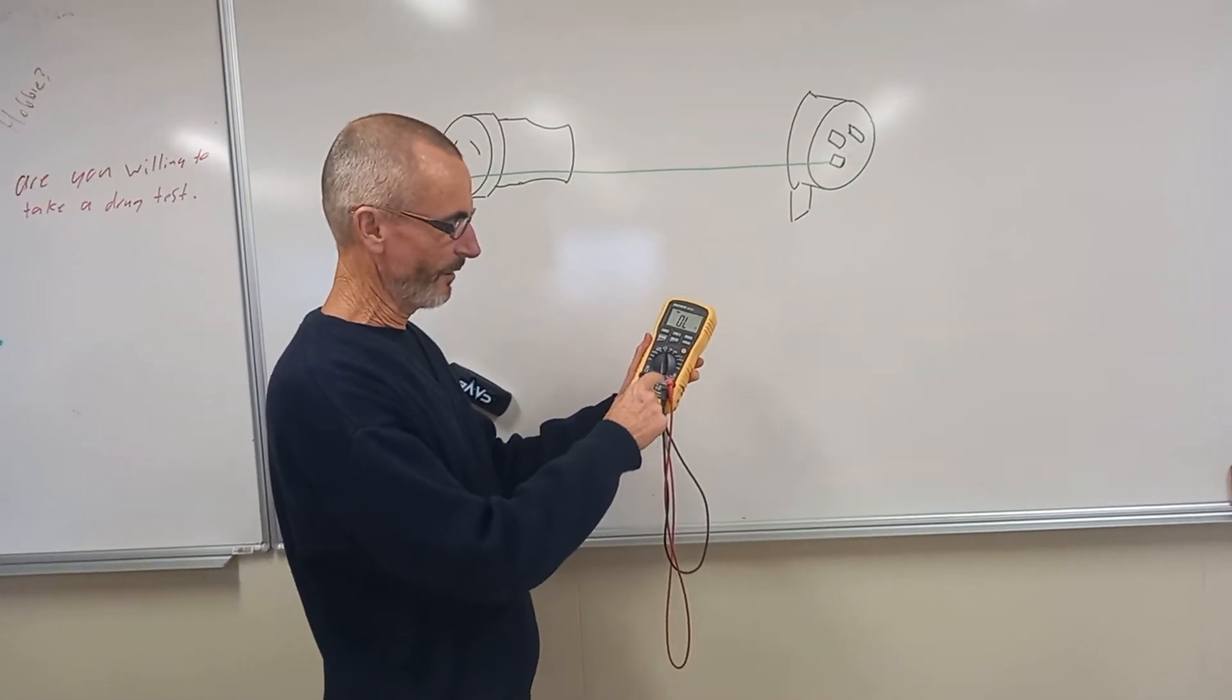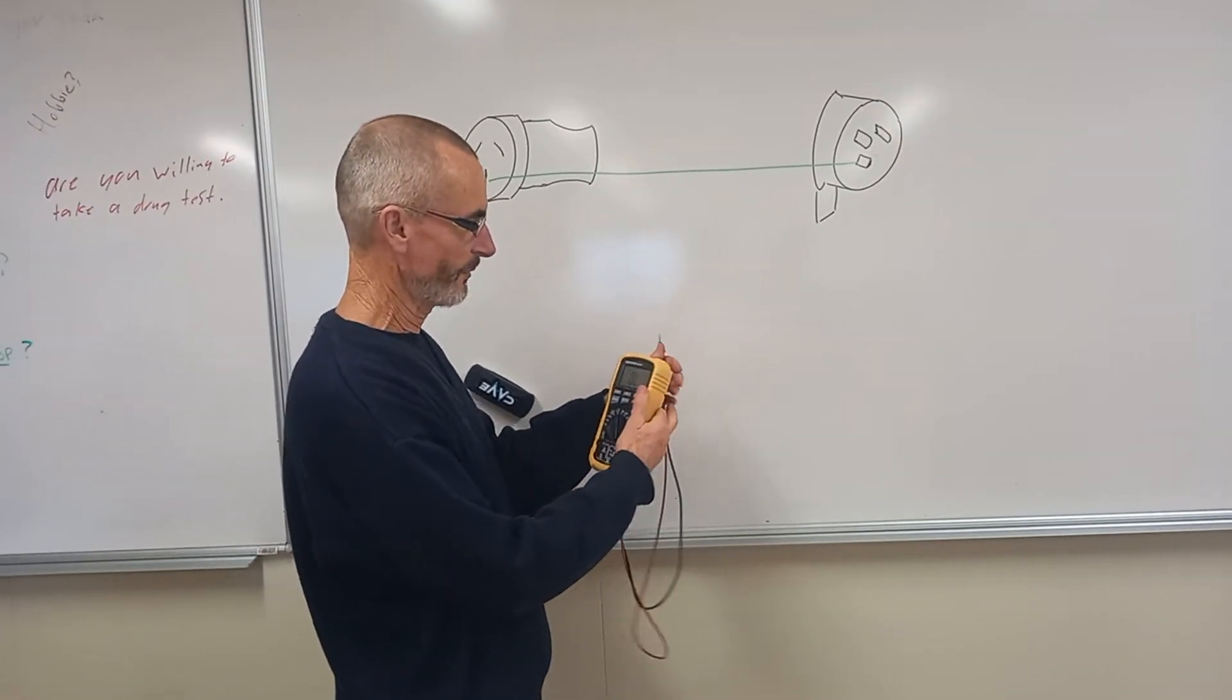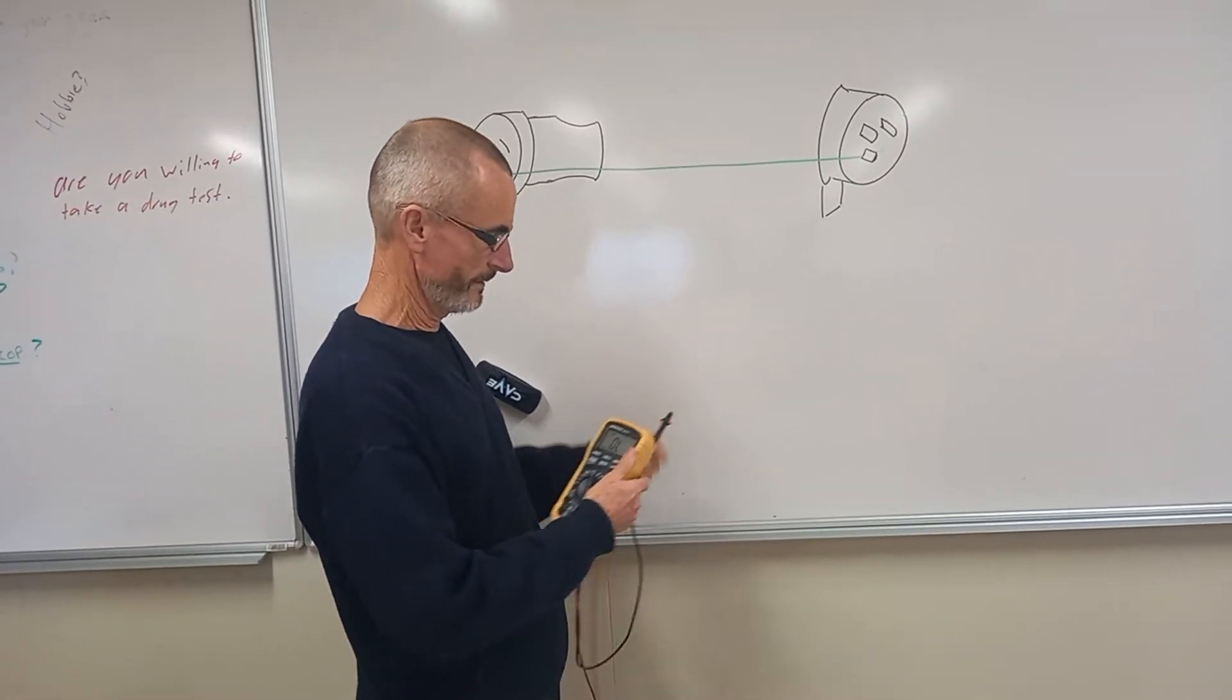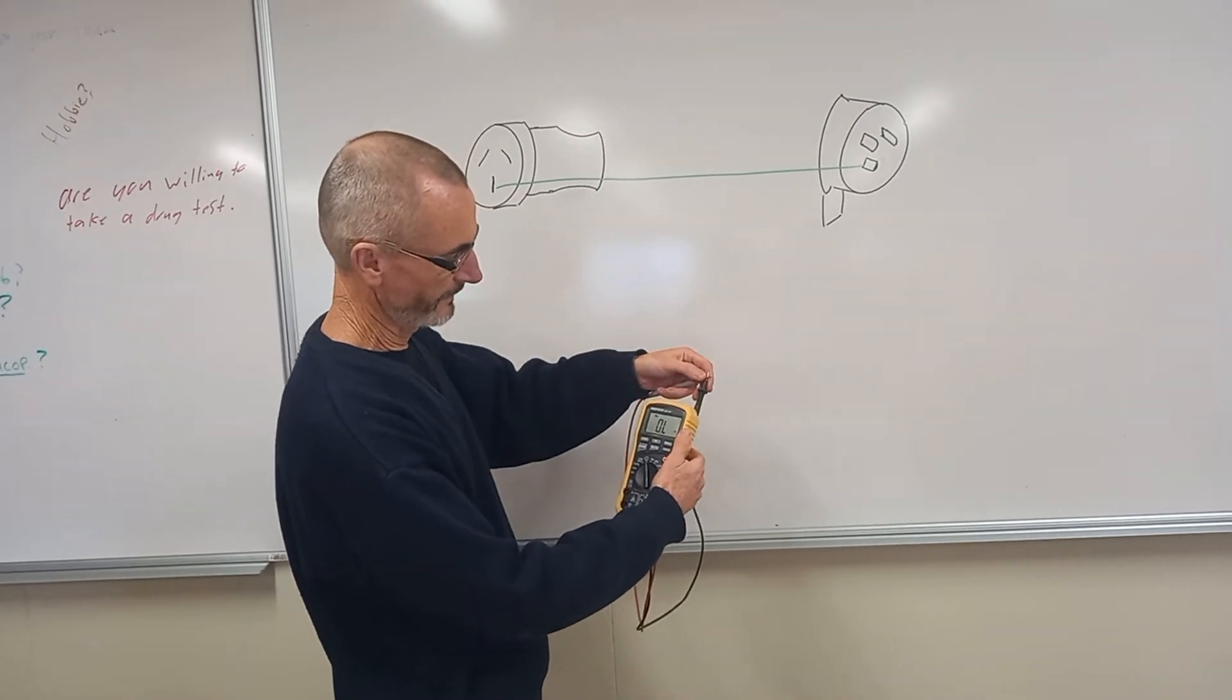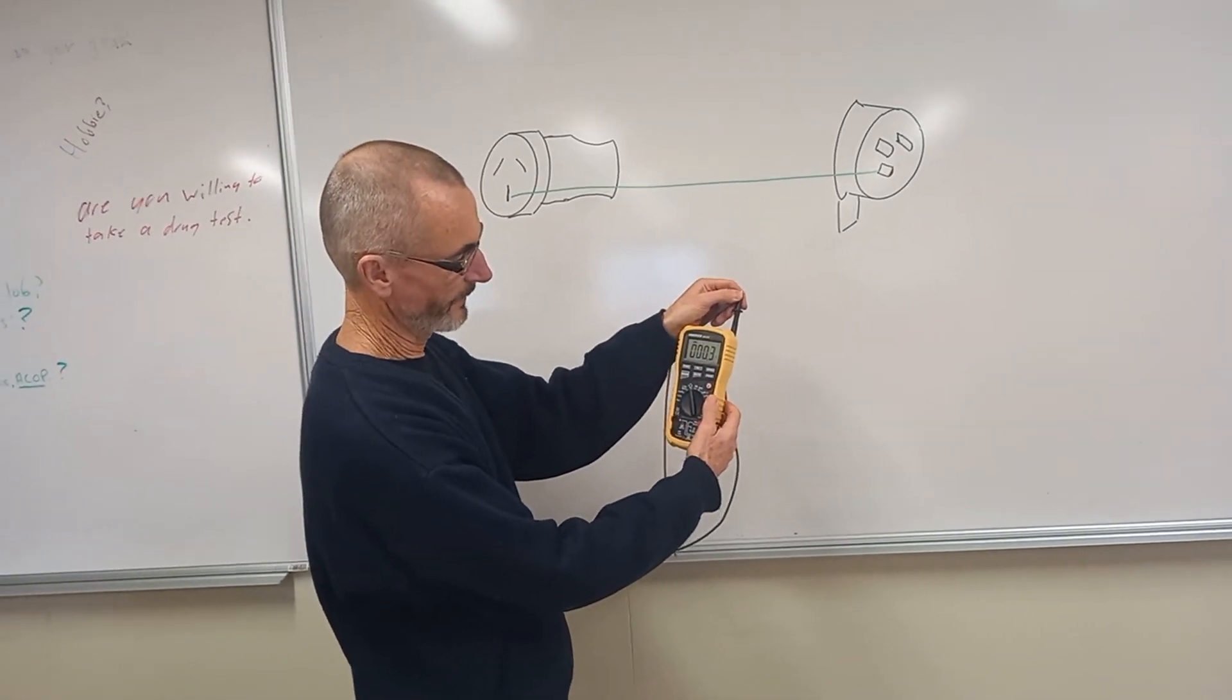Make sure it's plugged into the common and the ohms. Let's just join the ends of the probes together. Join the ends of the probes together with this particular meter. So zeroing the meter.